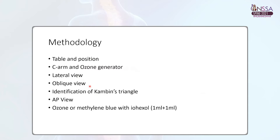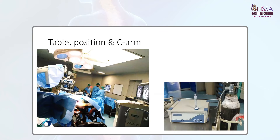One needs to understand clearly the anatomical landmarks of the lumbosacral area for needle placement into the disc. This is the OT setup: the patient is placed in the prone position with spinal attachment, and the C-arm is placed on the side of the operator. If the operator is standing on the right side and injecting from the right, the C-arm is on the right side and the monitor is placed opposite to the C-arm, facing the operator.